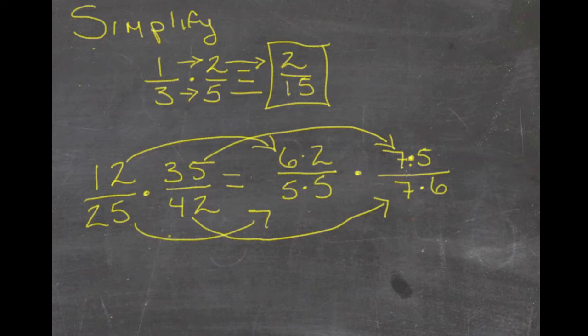Now you can see that we have the same thing on top and bottom in a number of places. So we can do some canceling. 6 goes with 6, 5 goes with 5, 7 goes with 7, and we just made our life a whole lot easier.